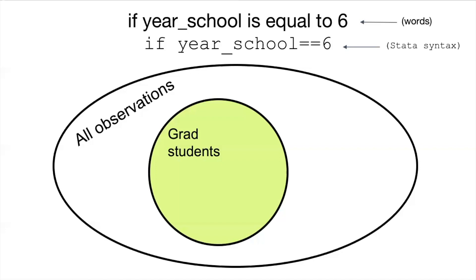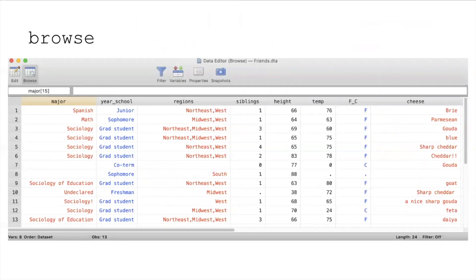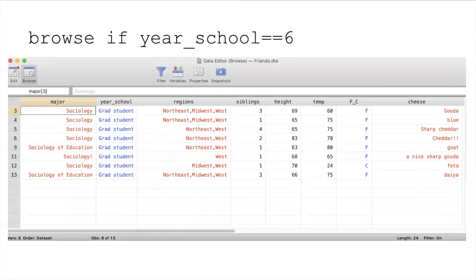Let's see what this actually looks like in STATA and what happens with the data. First, let's browse all of our data — here we have 13 observations and if we look at the year_school variable there's a huge range of different years in school. Now we can add the STATA syntax: browse if year_school == 6. Instead of the 13 total observations, now we're only looking at 8 — the 8 people who are grad students. Even though it says "grad student" in blue, the underlying information STATA is holding is the number 6.